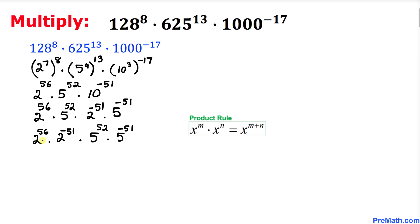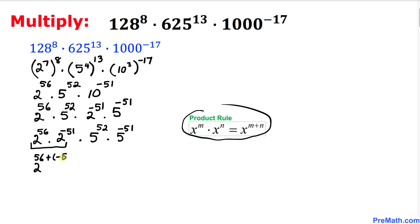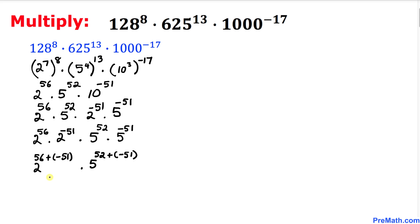Using the product rule, we add the exponents for the same base. For base 2: 56 plus negative 51 gives 2 power 5. For base 5: 52 plus negative 51 gives 5 power 1.